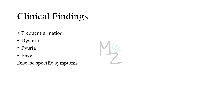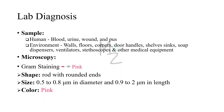Clinical findings depend on the type of infection. Urinary tract infection symptoms include frequent urination, dysuria, pyuria, and fever. Pneumonia symptoms include fever, cough, and chest discomfort. For lab diagnosis, samples needed include blood, urine, wound swabs, and pus from patients.